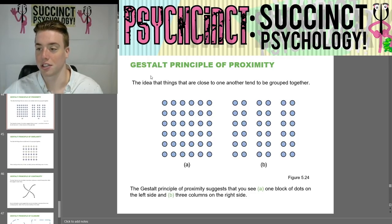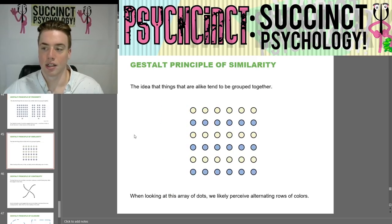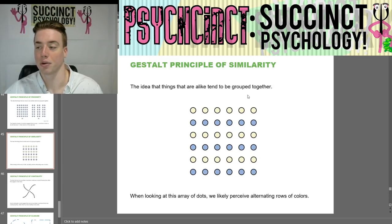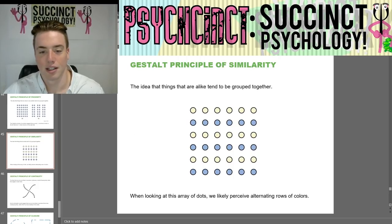The gestalt principle of proximity is the idea that things close to one another tend to be grouped together. Proximity suggests you see figure A as one block of dots and figure B as three individual columns. The gestalt principle of similarity is the idea that things that are alike tend to be grouped together — when looking at an array of dots, we perceive alternating rows of colors rather than just individual dots.